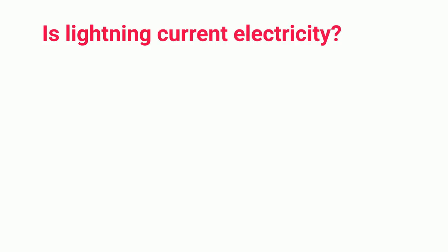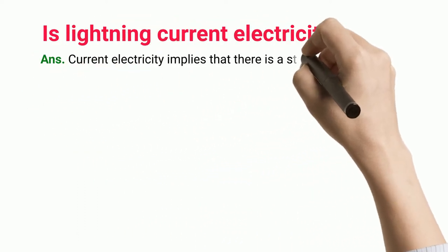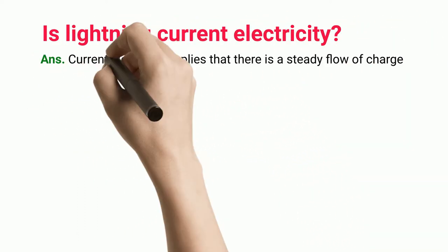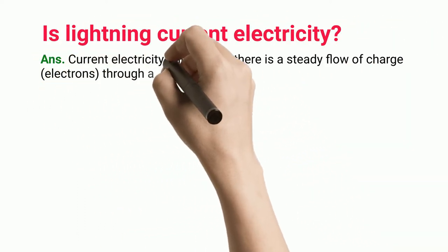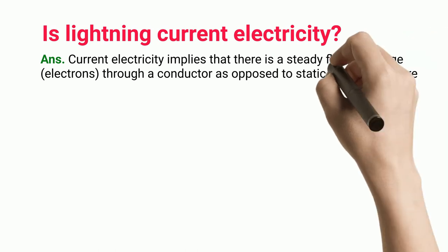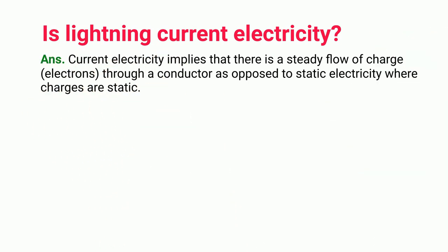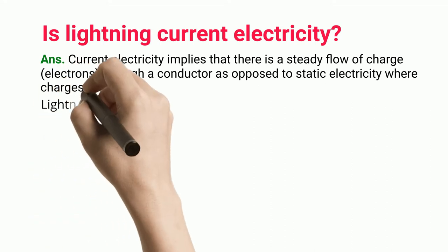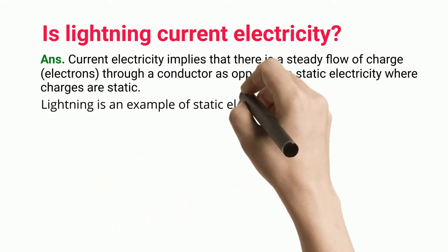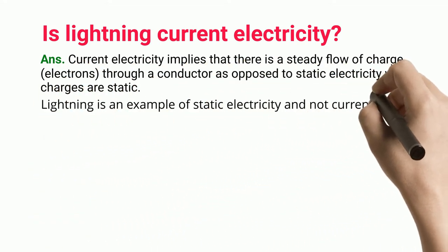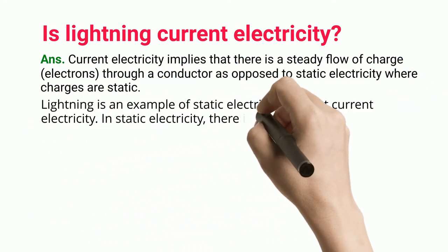Is lightning current electricity? Current electricity implies that there is a steady flow of charge electrons through a conductor, as opposed to static electricity where charges are static. Lightning is an example of static electricity and not current electricity.